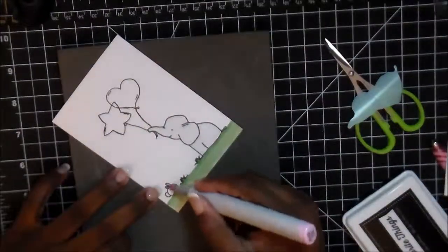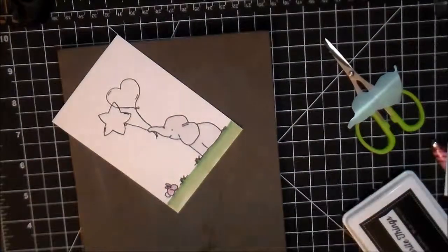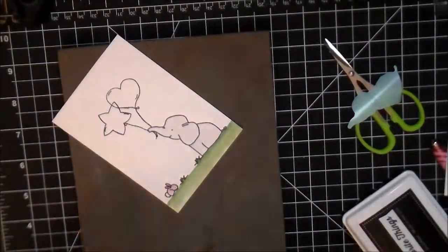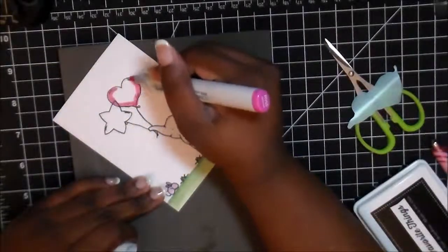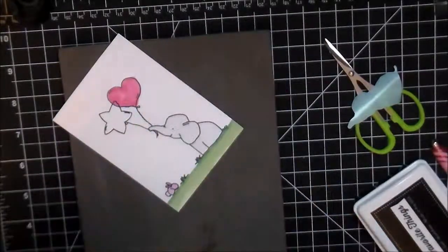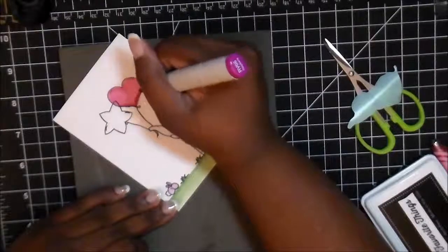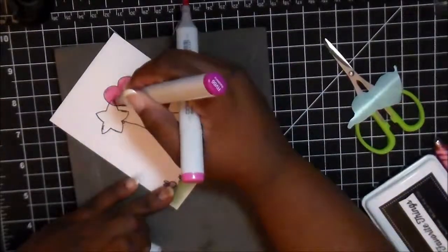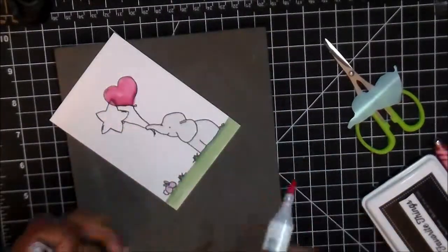And then I took a pink and just did the bunny and left the tail white and then I'm using two shades on the balloon and that is RV66 and RV55.